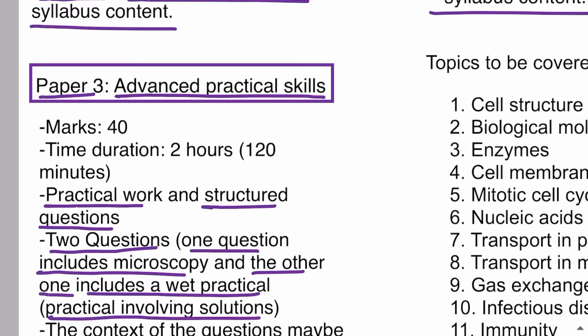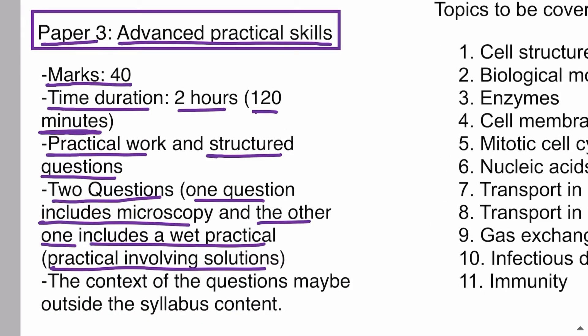The total marks for Paper 3 are 40, and the time duration is two hours — 120 minutes — which is more than the other papers because you have to do the practical work, which takes time. The most important thing about this paper is that the context of the questions may be outside the syllabus content. You might get practicals not in your syllabus, but don't worry — you will be given information about it and then you answer the questions accordingly.